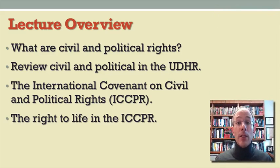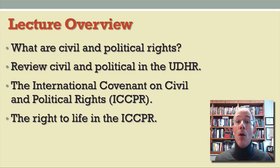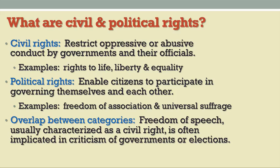Let's begin today's class with the following overview. We will talk first about what civil and political rights are. We'll review the civil and political rights that we've seen in the Universal Declaration on Human Rights, and then analyze the International Covenant on Civil and Political Rights with a specific example of the right to life. Civil rights, as generally defined, are rights that restrict abusive or repressive conduct on the part of governments and their agents or officials. Classic examples include the rights to life, liberty, and equality.